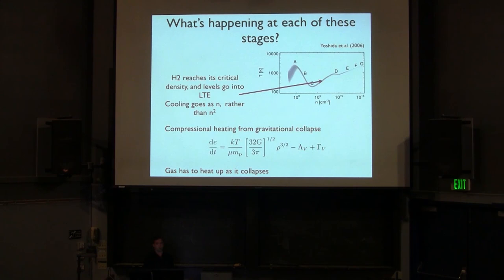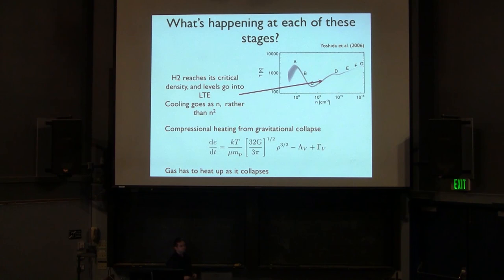A simpler way to understand it: at high density the gas goes to LTE, the energy level populations are completely determined by temperature and are unaffected by radiation. The rate of emission is simply proportional to how many emitters there are in that level — which depends only on temperature, not density — so the cooling rate per unit volume is simply proportional to the number of atoms, going as N.